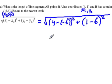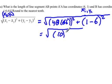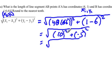So what we end up with is 4 minus negative 6, remember add the opposite, so it becomes 10 squared, plus negative 5 squared. And this is equal to the square root of 10 squared is 100, plus negative 5 squared is positive 25, so this is equal to the square root of 125.